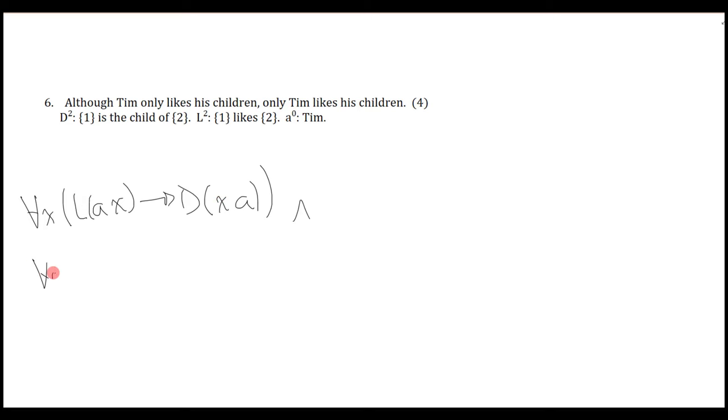Now, some people will see this as the contrapositive form. So if you're not a child of Tim, then Tim doesn't like it or you or whatever. And you can even see this in some other way. It's not the case that there is something that is liked by Tim and not a child of Tim. So there's lots of ways to sort of see this. It's just really understanding the meaning. You just paraphrase it out in any way you want.